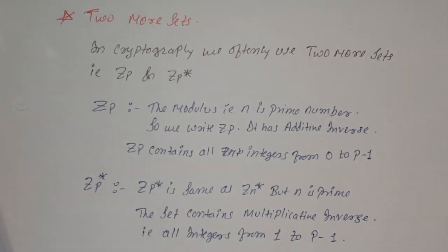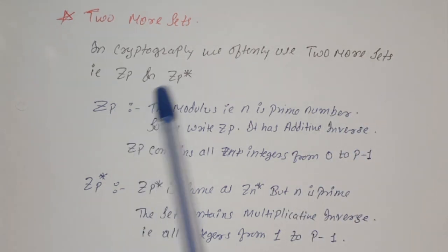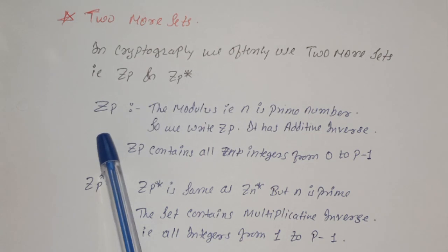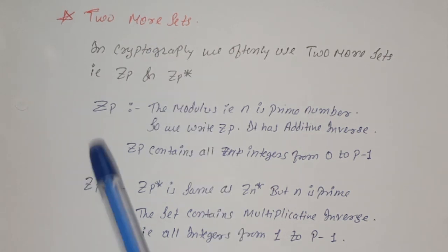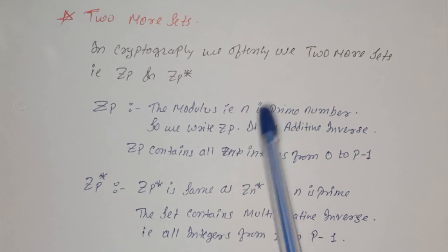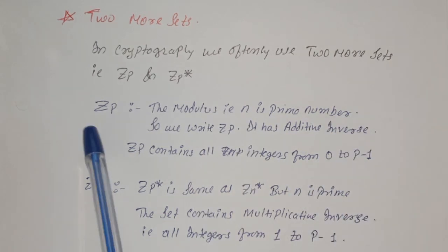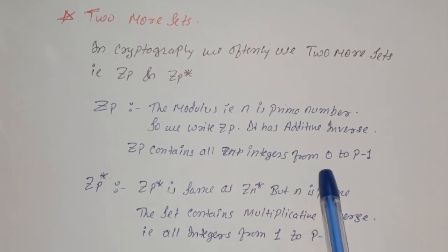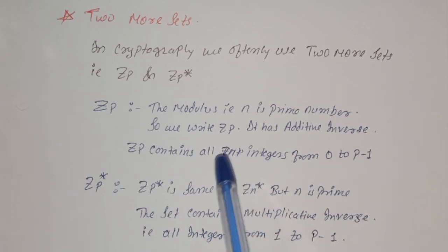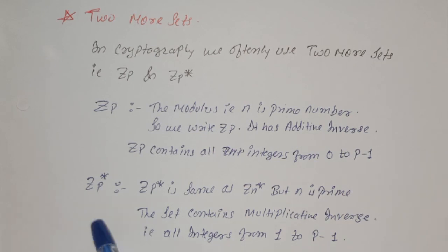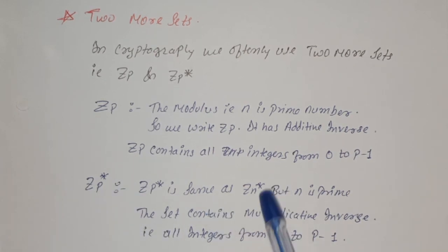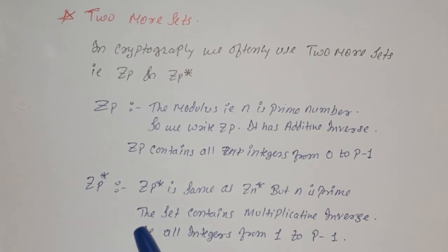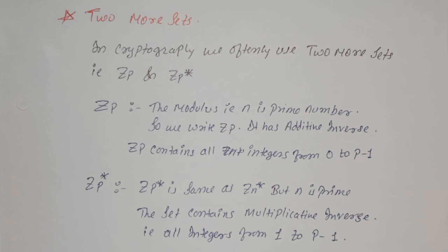Now we will see 2 more sets. In cryptography often we use 2 more sets: Zp and Zp star. So basically what is Zp? Zp is similar to Zn, but only modulus, that is n, is a prime number. So this set Zp contains all the integers from 0 to p minus 1, and it has additive inverses.